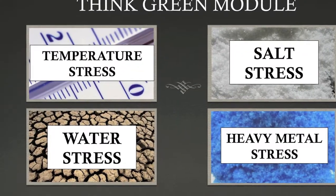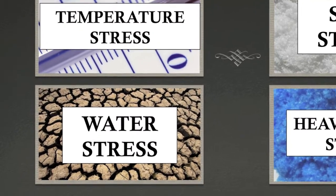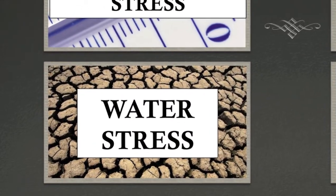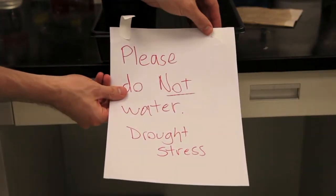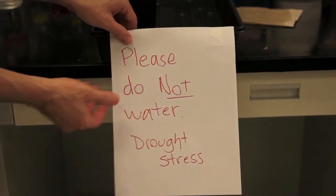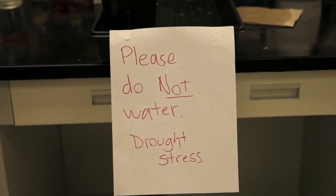The water stress treatment is the simplest and requires only that you expose the plants to drought. You can do this by reducing the frequency at which you water, only doing so at the last moment when plants are wilting. In order to ensure that no one else waters your plants during this treatment, label your tray with a sign.